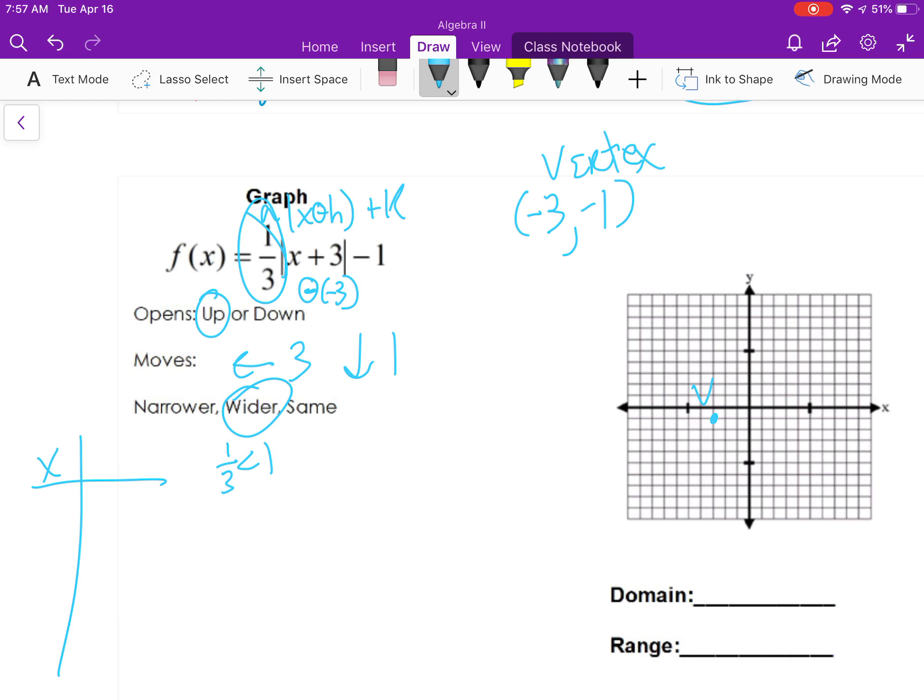Make my table. So negative 2, 2, negative 1, 1, 0, 0, 1, 1, 2, 2. But now we are going to make that third column, and we're going to multiply those all by 1 third. Because that's your value of a. So 2 thirds, 1 third, 0, 1 third, and 2 thirds.